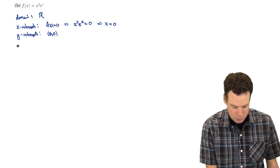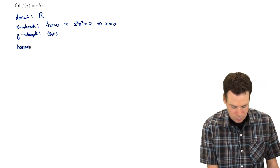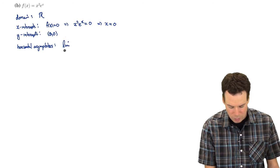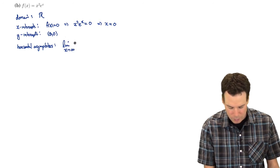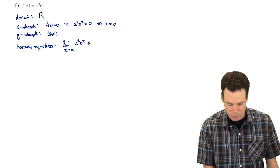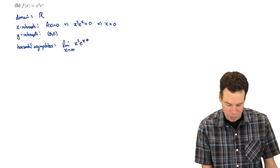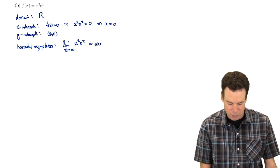How about asymptotes? Do we have any horizontal asymptotes? We get horizontal asymptotes by looking at end behavior. What's going on as we head off towards positive infinity of x²eˣ? As we head towards positive infinity, x² blows up and eˣ blows up as well — the product blows up even more, so this is heading off to infinity.